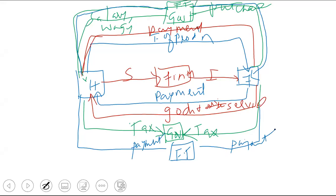All the circular flow models are now covered: two-sector model, two-sector model with saving and investment, three-sector model, and four-sector model. Leakages and injections in the circular flow are very important — please remember that. The first topic on circular flow is complete. I will share the attendance link now.